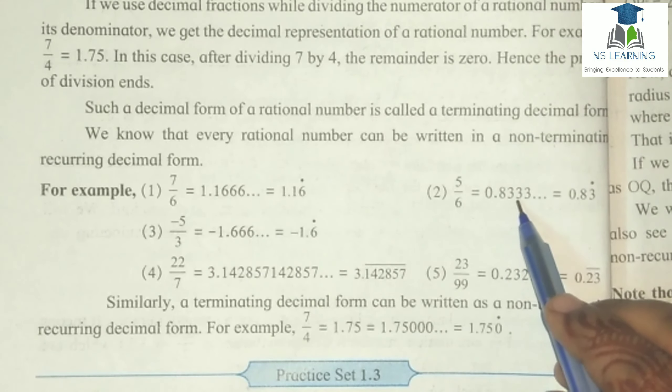If we use a decimal fraction while dividing the numerator of a rational number by its denominator, we get the decimal representation of that rational number. For example, 7 divided by 4 gives a decimal form. After dividing 7 by 4, the remainder is 0, hence the process of division ends.